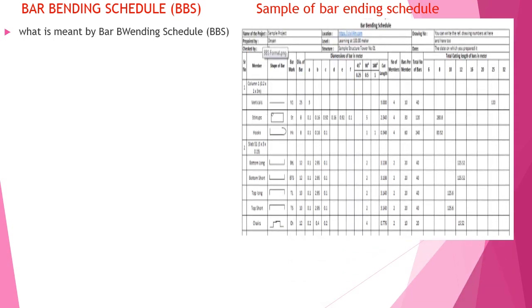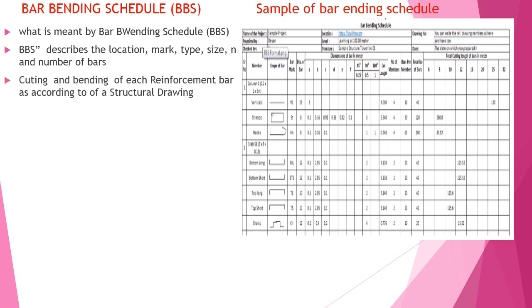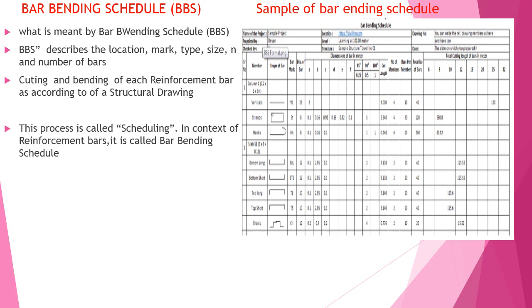Refer to the image which indicates how the bar bending schedule has to be prepared in an Excel format. BBS is nothing else but identifying the location of the bar, mark of the bar, type, size, etc. This can be derived from the structural drawing. This process is also called scheduling.